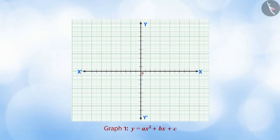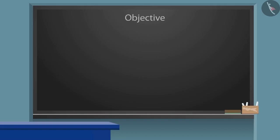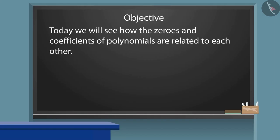Welcome to this video. So far, we have read about the geometric meaning of the zeros of polynomials. Today, we will see how the zeros and coefficients of polynomials are related to each other.